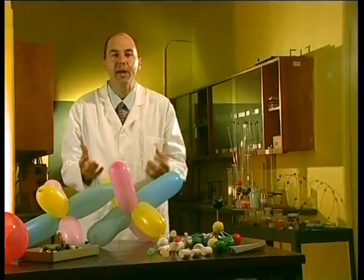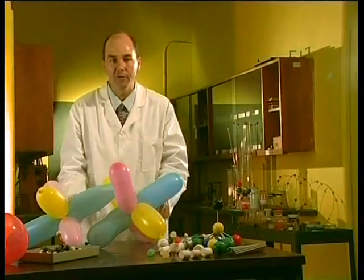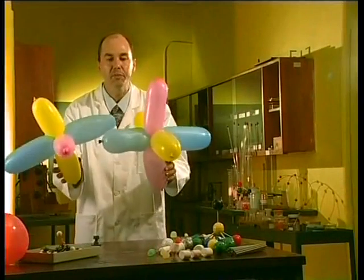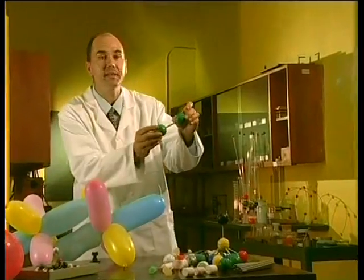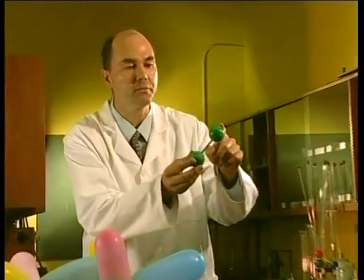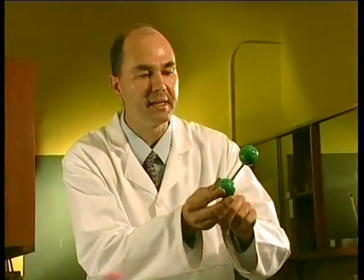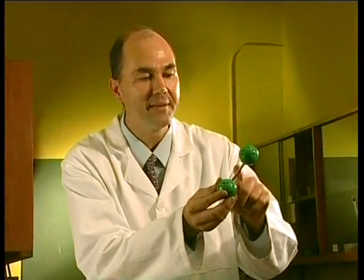There are many different ways to make models of covalent molecules. We can use balloons to show how the orbitals overlap. Or we can look at a plastic model set of the hydrogen molecule. The balls represent the atoms of hydrogen, and the stick represents the bond between them.